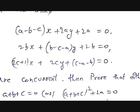Now let's see an example. If the lines (a - b - c)x + 2ay + 2a = 0, 2bx + (b - c - a)y + 2b = 0, and (2c + 1)x + 2cy + (c - a - b) = 0 are concurrent, prove that either a + b + c = 0 or (a + b + c)² + 2a = 0.